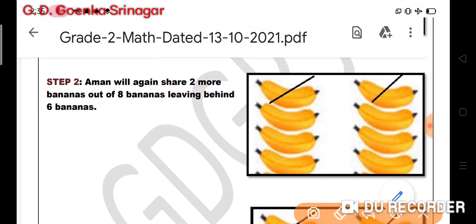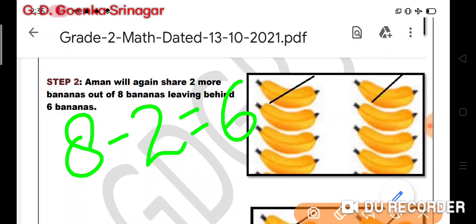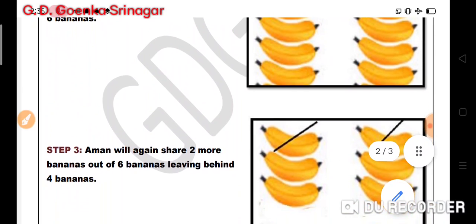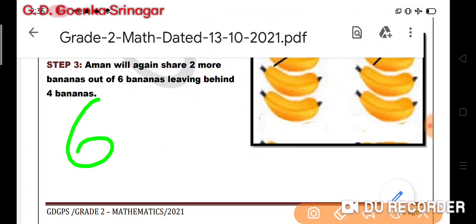Now again out of 8, Amman will share 2. He will take away 2 and he is left with 6 bananas. Then out of these 6 bananas he will share 2 more, leaving behind 4 bananas.